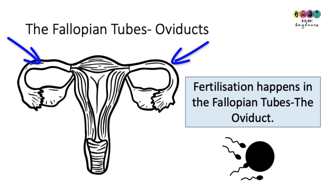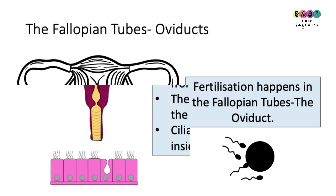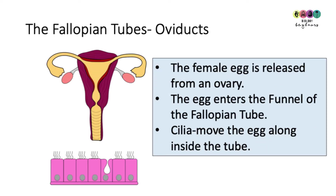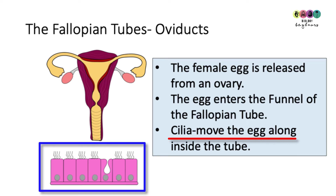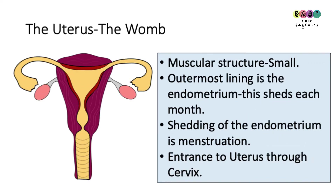Next on the diagram are the fallopian tubes, otherwise called the oviducts. Fertilization takes place in the fallopian tubes — F for fallopian tubes, F for fertilization, that's how to remember it. Fertilization is the fusion of two haploid gametes to form a diploid zygote. The female egg is released from the ovary and enters one of the fallopian tubes, where little hair-like projections called cilia move the egg along toward the uterus.